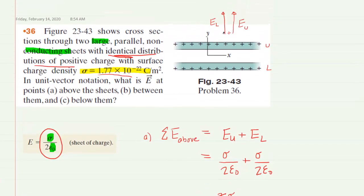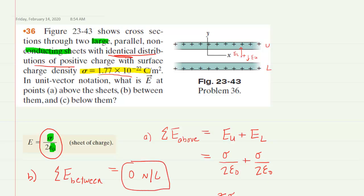Moving on to part B, we're now looking between the sheets. Placing a positive test charge at an arbitrary location between the sheets: the upper sheet would repel it downward (E-U points down) and the lower sheet would repel it upward (E-L points up). Since the magnitudes are equal — the surface charge densities are equal — the upward and downward electric fields cancel each other out. The total electric field between the sheets is zero newtons per coulomb.